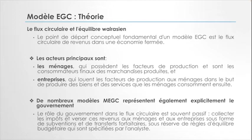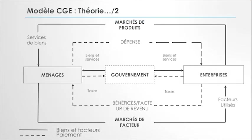Nous avons tous ces facteurs qui essaient d'influer sur l'économie, le flux circulaire de notre économie, et les différents agents qui essaient soit d'offrir un bien ou un service, soit de collecter des revenus. En ce qui concerne la cartographie de cet équilibre, nous avons identifié trois agents : les ménages, les entreprises et le gouvernement. Nous avons le marché des facteurs de production et le marché des biens et services.